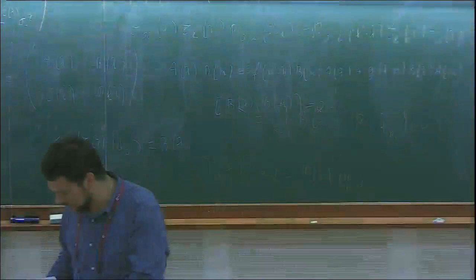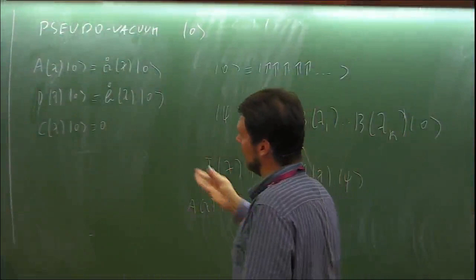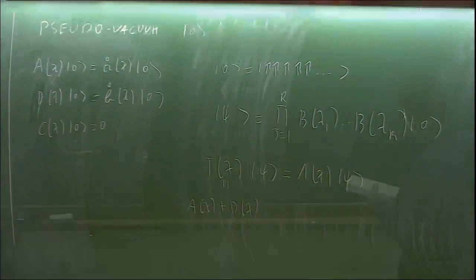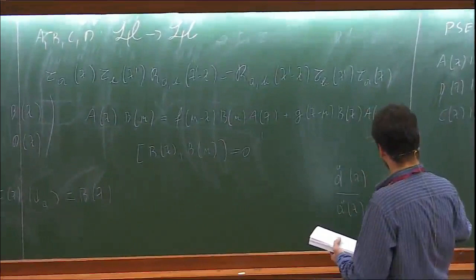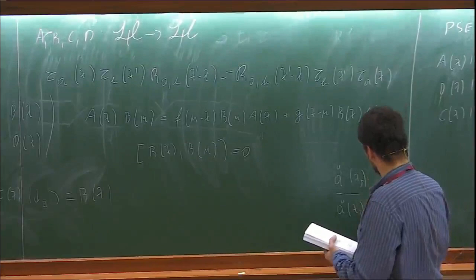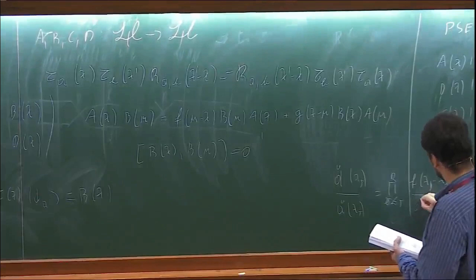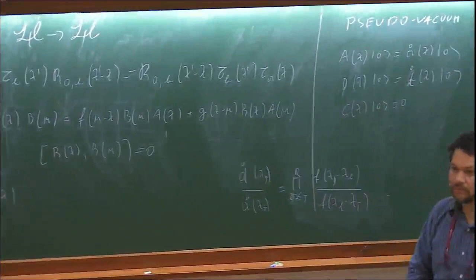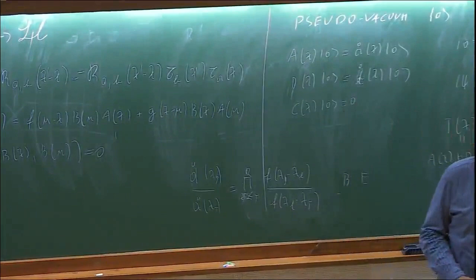The result of this procedure is: if this state is an eigenstate of the transfer matrix, then D(λ)/A(λ) must equal the product over j ≠ l of [F(λ_j - λ_l) / F(λ_l - λ_j)], which when spelled out explicitly are the Bethe equations for the XXZ chain. So you have complete consistency between the two approaches — the coordinate and the algebraic Bethe Ansatz.